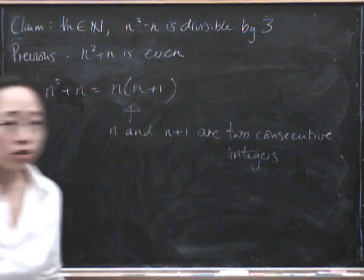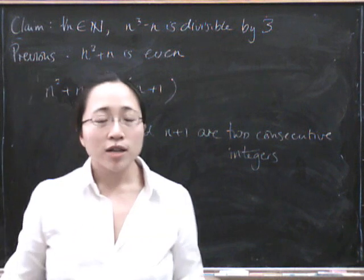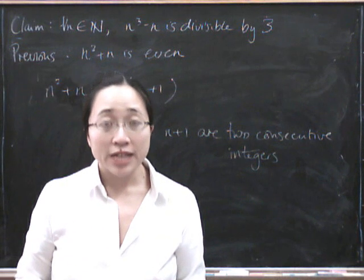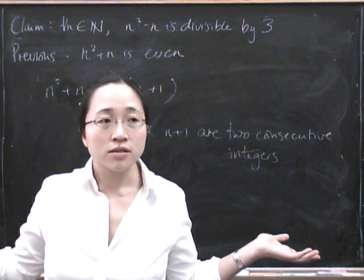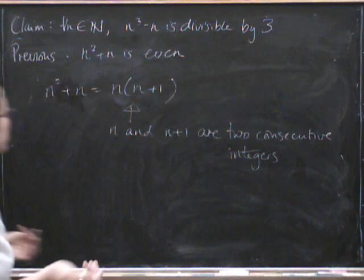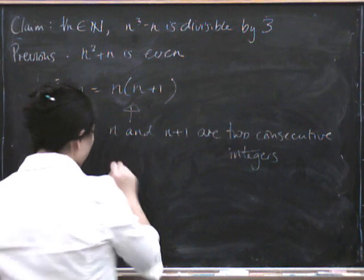And if you take any two consecutive integers, one of them has to be odd and the other one has to be even. So if you multiply them together, you've got to get something even, right? That was kind of easy, wasn't it?